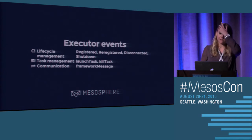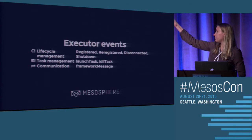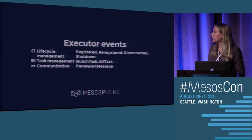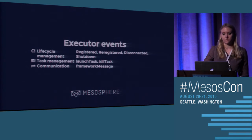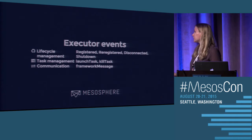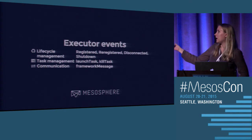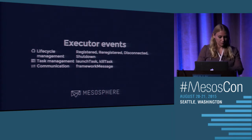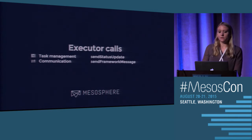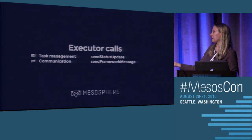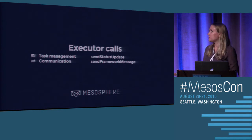For executor events, we have registered, re-registered, disconnected, shutdowns, the ability to launch and kill tasks, task management, lifecycle management, and communication to your distributed application scheduler. This can be done via task status or via framework message, which is not guaranteed. The executor calls send status updates related to a task, send framework messages, handle task management and communication.